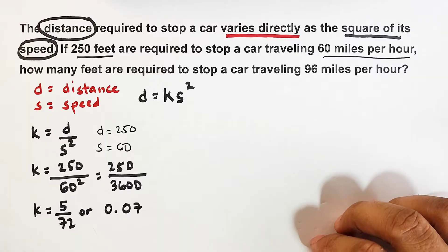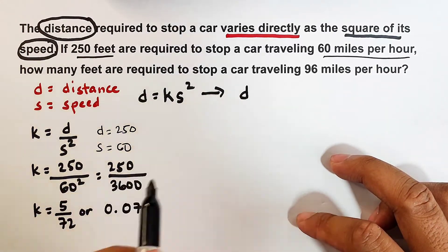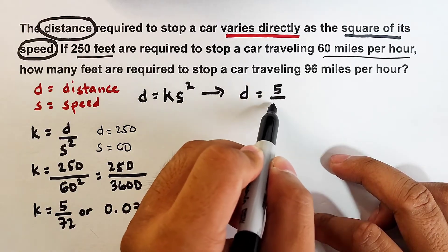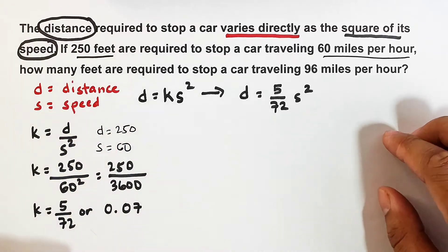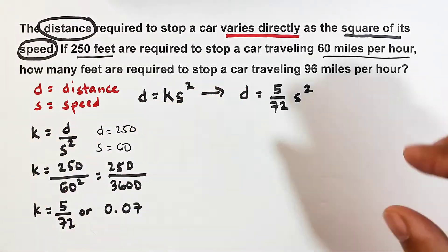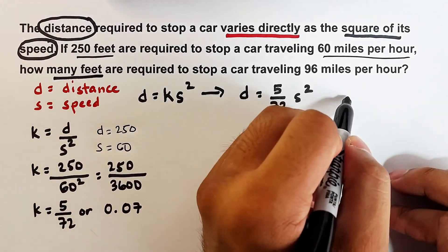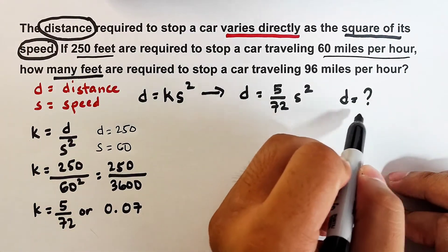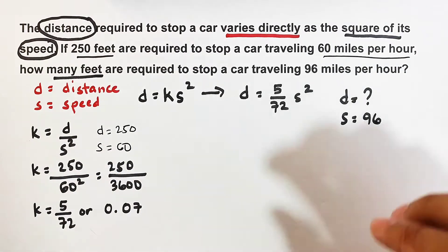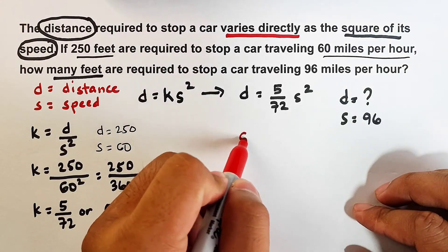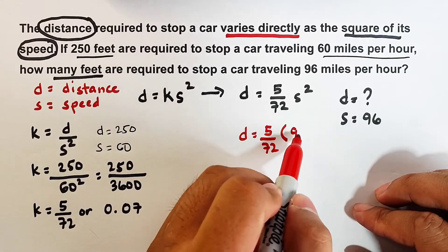Now that we have the value of k, we substitute it into the formula to get our working equation: d equals (5/72) times s squared. We will now solve the main problem — how many feet are required to stop a car traveling 96 miles per hour. The distance is unknown and the speed is 96 miles per hour, so we substitute s equals 96.